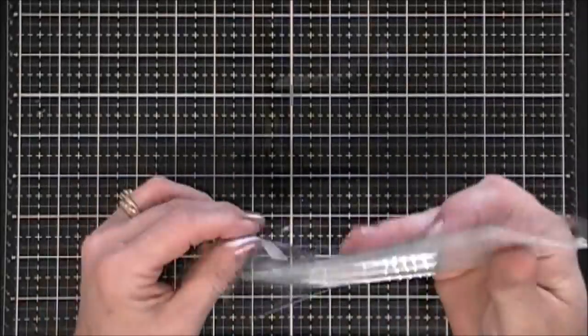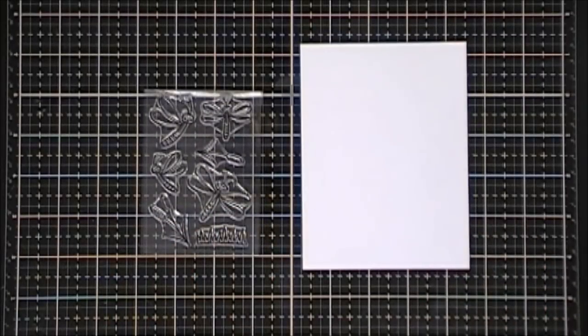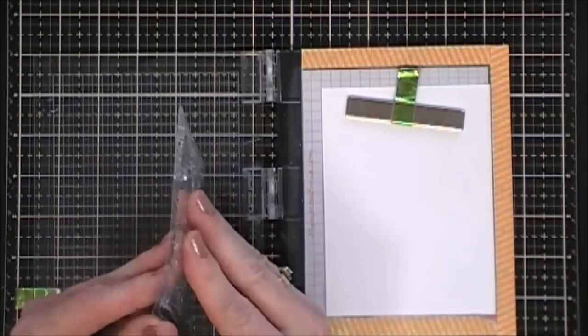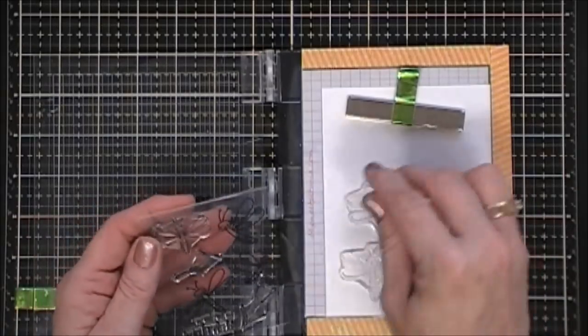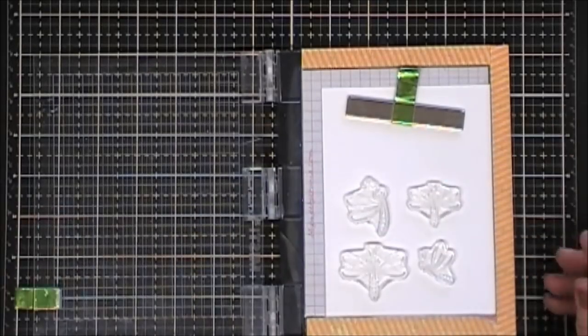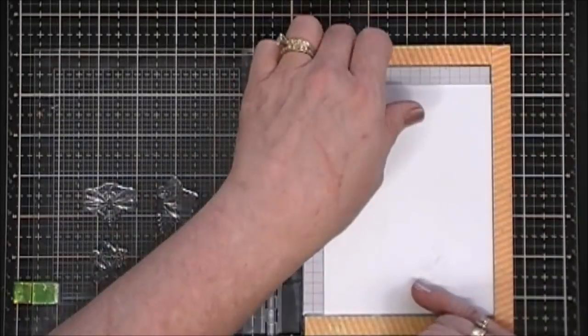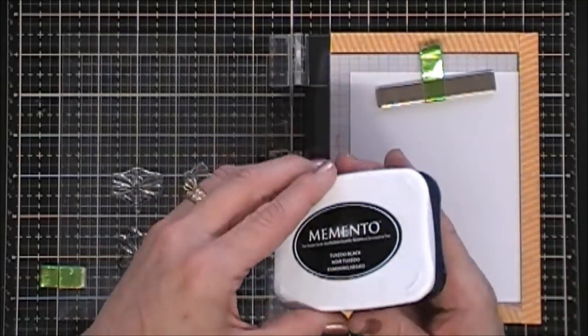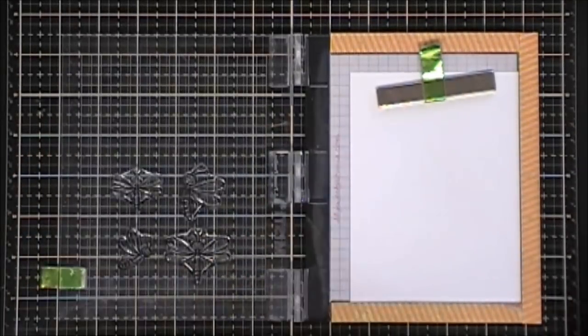When I saw this cute little stamp set I knew exactly what I wanted to do with it, so I picked it up. This is called Darling Dragonflies. It's a smaller 3x4 stamp set with no sentiments in here, but that's okay, we can always pull from our stash. We're going to start off by stamping all four of the dragonflies on white cardstock. I'm using Memento Tuxedo Black ink to ink up my images.